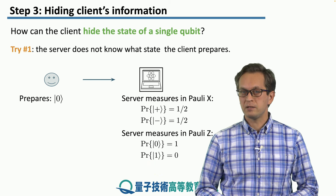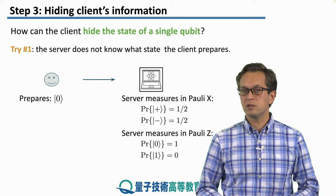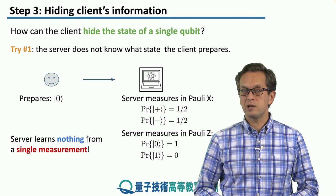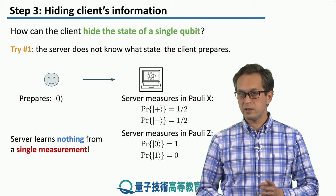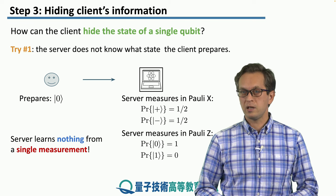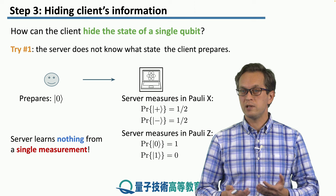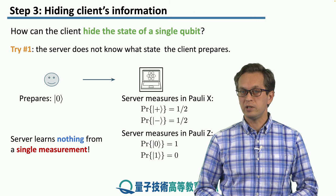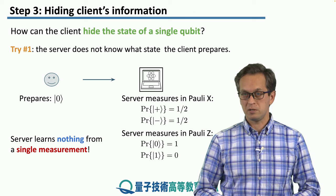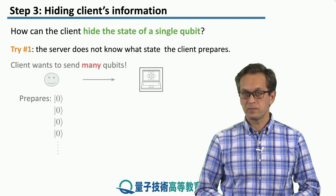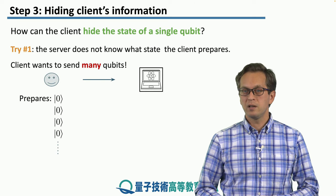But this doesn't matter, because the client is sending only a single qubit, meaning that the server learns nothing from a single measurement. However, this is not quite the case when we try to delegate quantum computation — the client is trying to send many qubits to the server. What happens then?